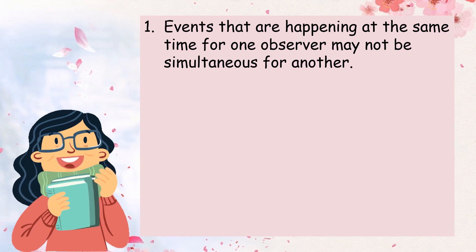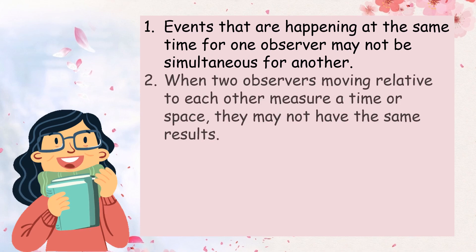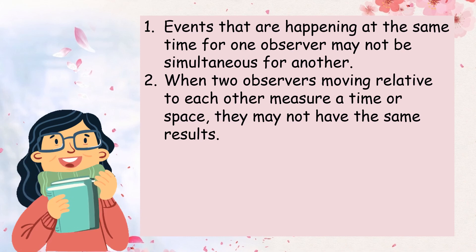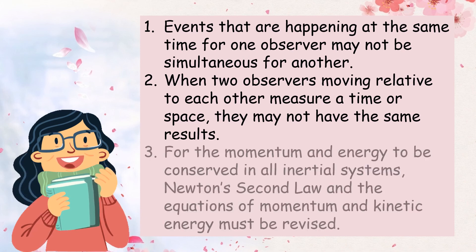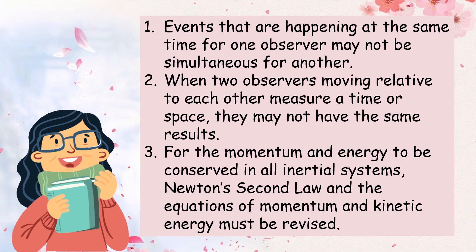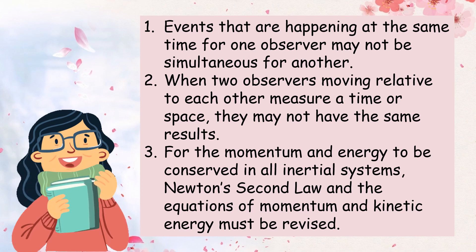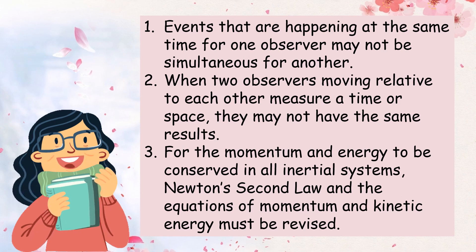These postulates imply that events happening at the same time for one observer may not be simultaneous for another. Second, when two observers moving relative to each other measure time or space, they may not have the same results. Third, for momentum and energy to be conserved in all inertial systems, Newton's second law and the equations of momentum and kinetic energy must be revised. Simply put, these two postulates clarify that if two events happen at different places, it is not always possible to say which of the two events happens first or that they occur at the same time.